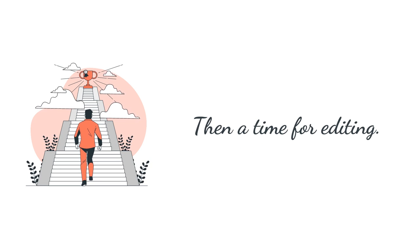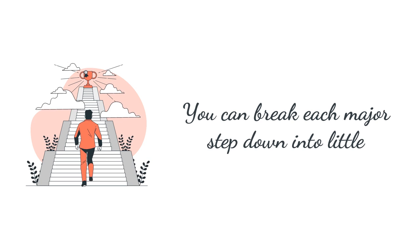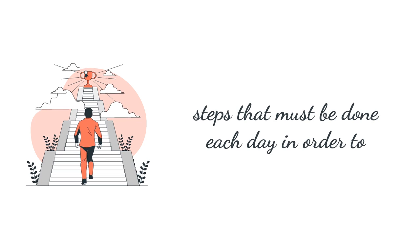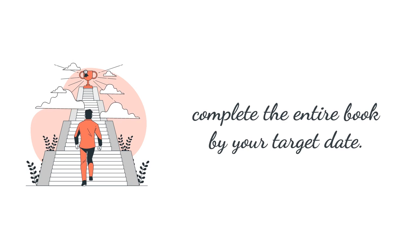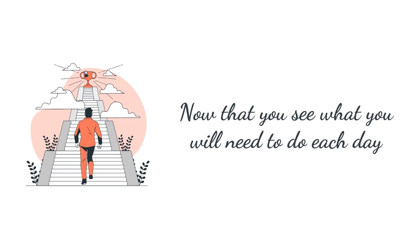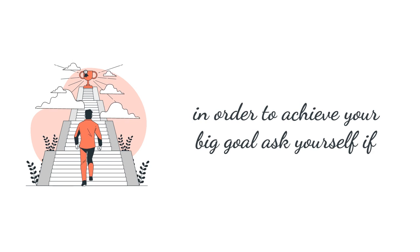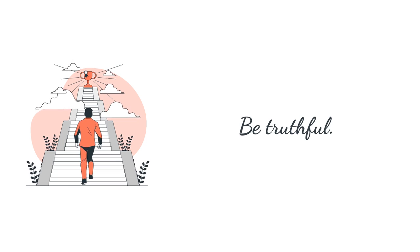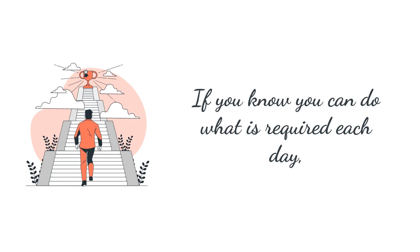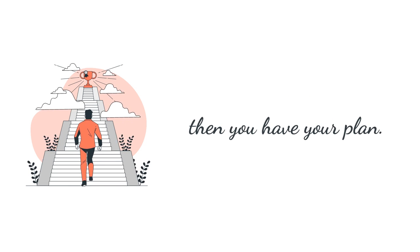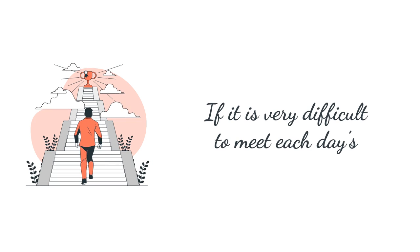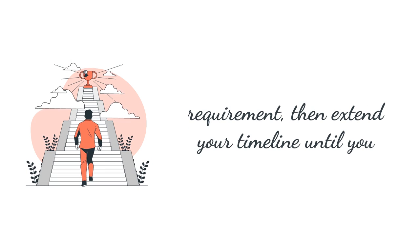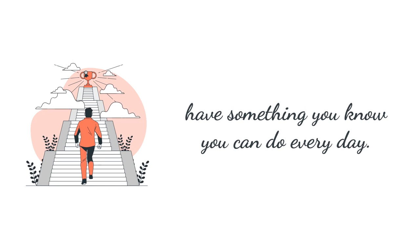Then a time to complete each chapter, then a time for editing. You can break each major step down into little steps that must be done each day in order to complete the entire book by your target date. Now that you see what you will need to do each day in order to achieve your big goal, ask yourself if each day's task is reasonable. Be truthful. If you know you can do what is required each day, then you have your plan. If it is very difficult to meet each day's requirement, then extend your timeline until you have something you know you can do every day.